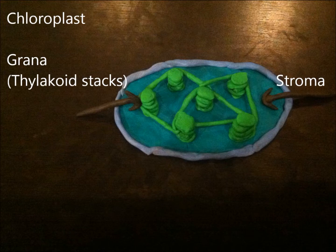The first pathway is a light-dependent reaction. This occurs in the thylakoid membrane in the grana.